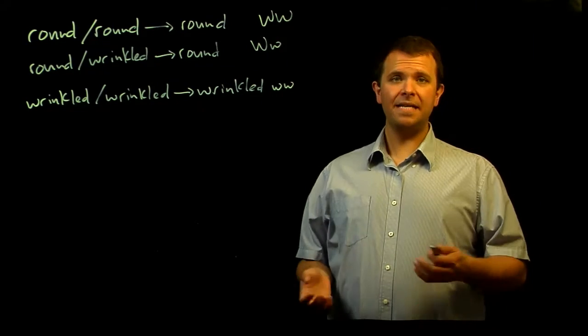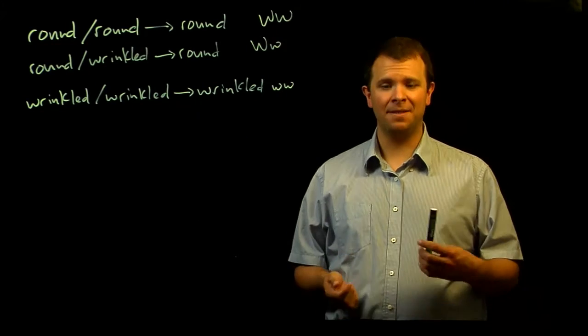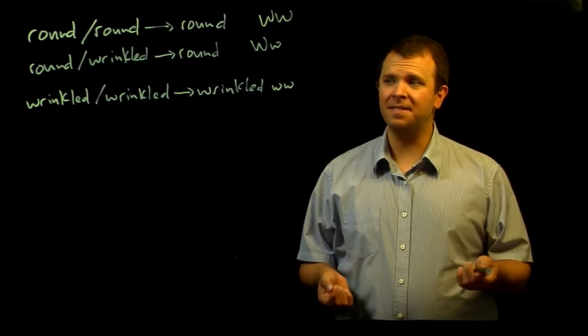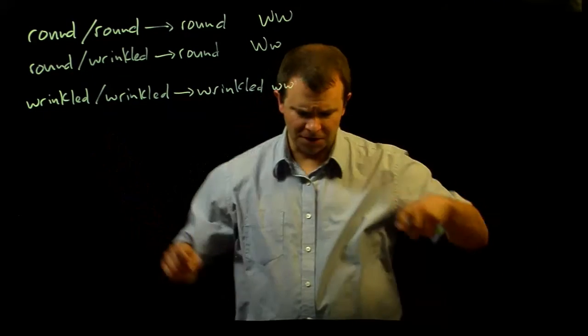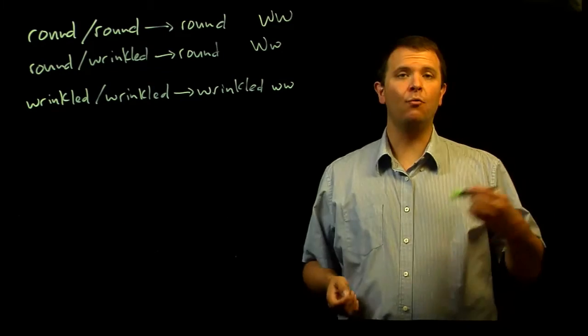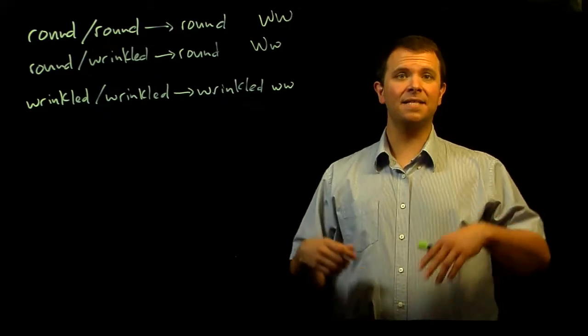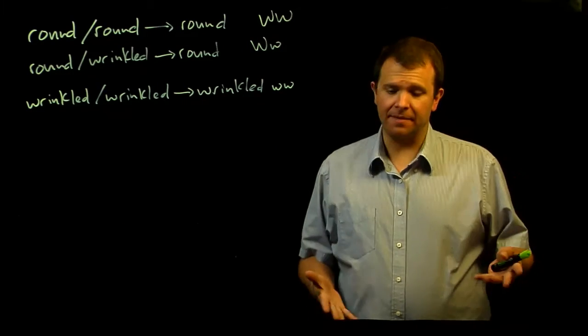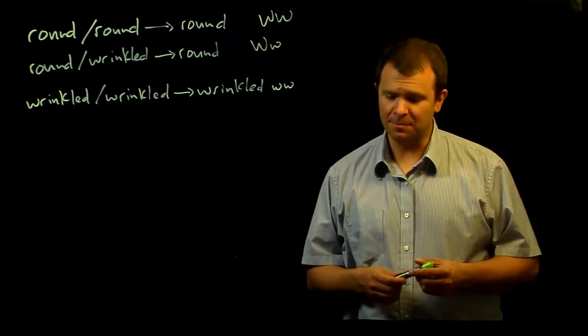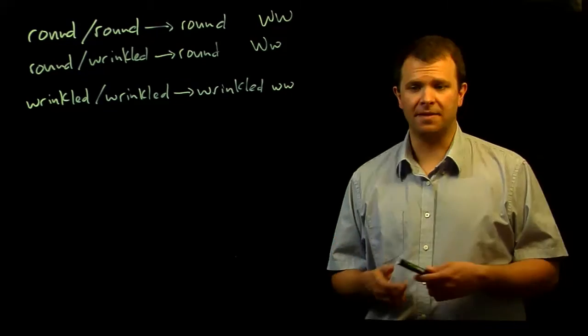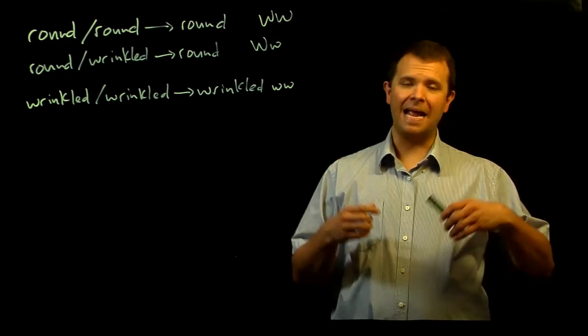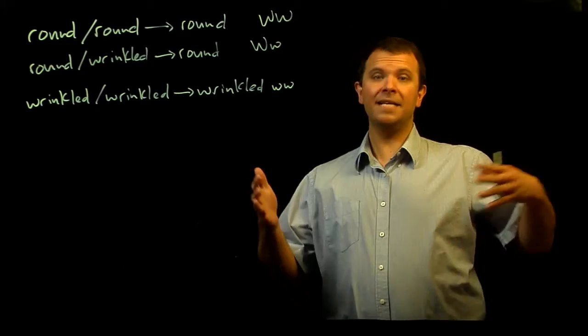And second, we need to recognize the role that chance plays. An organism's cells contain two alleles of each gene, but which of those alleles ends up in a gamete is random. Most organisms produce many gametes over their lifetime, but which one ends up making a zygote is random.